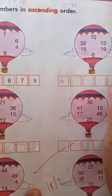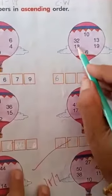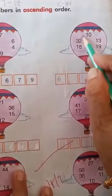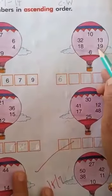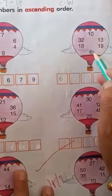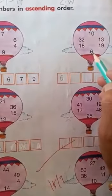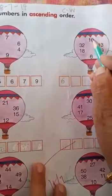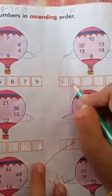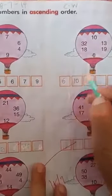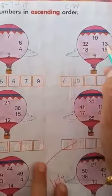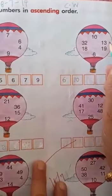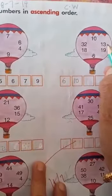Now compare these numbers — which is the smallest number? The smallest number is 10. We will write here 10. Now 4 numbers are left. Which is the smallest? 13.